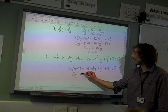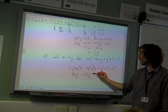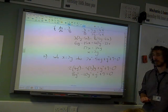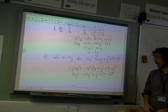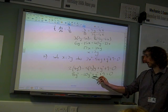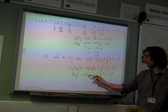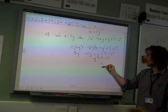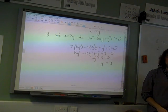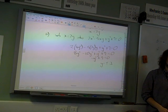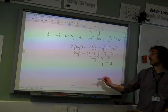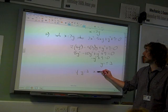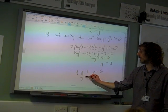8y squared minus 10y squared plus y squared plus 9 equals 0. That's nice and convenient. We're heading for plus or minus 3, aren't we? We've got minus y squared plus 9 equals 0, so y equals plus or minus 3. Therefore, if y equals 3, x equals 6; if y equals minus 3, x equals minus 6.